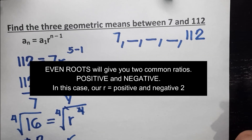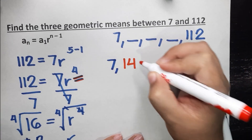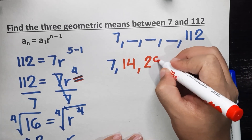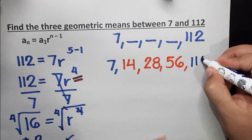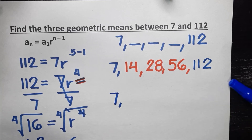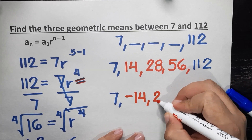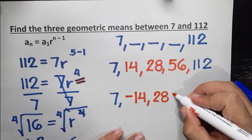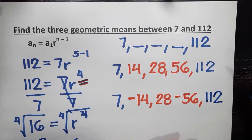Using positive 2: 7 times 2 is 14, times 2 is 28, times 2 is 56, times 2 is 112. Using negative 2: 7 times negative 2 gives negative 14, times negative 2 gives positive 28, times negative 2 gives negative 56, times negative 2 gives 112. So both the positive and negative 2 satisfy these two geometric sequences.